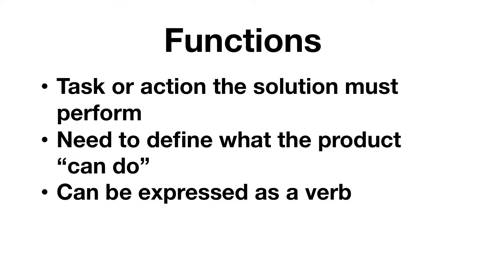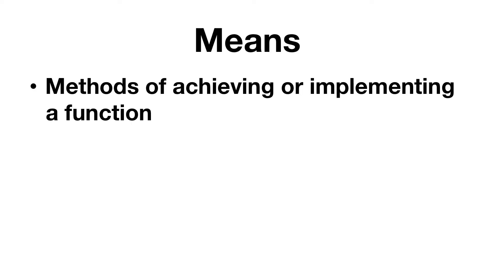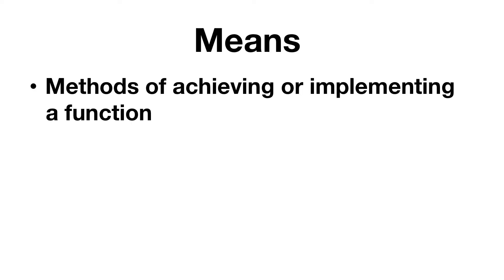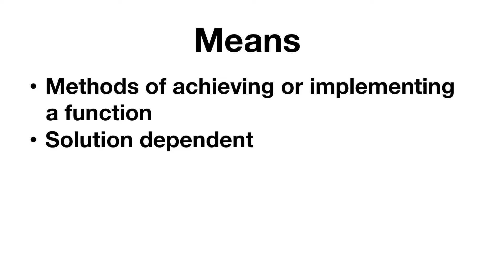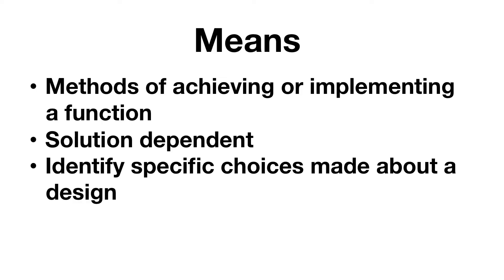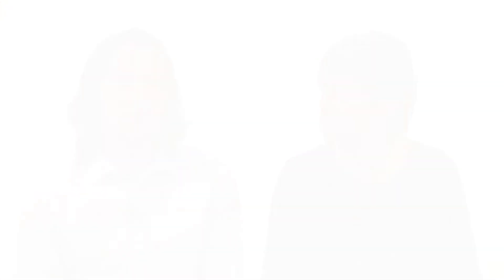Basic functions must be met. Hand in hand with functions are means. Means are methods of achieving or implementing a particular function, such as the device must be made of a particular material. Means are solution dependent, and they identify specific choices that you must make about a design. Our next task is to organize these desired features into the four different categories we've just defined: objectives, constraints, functions, and means.